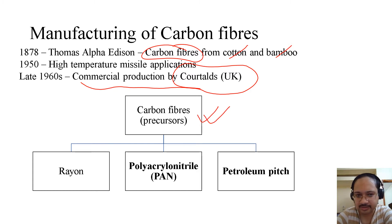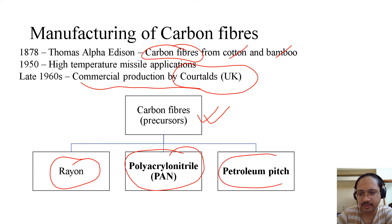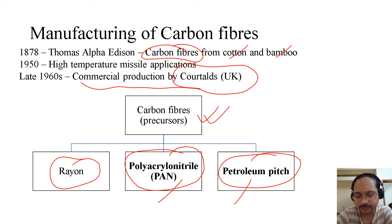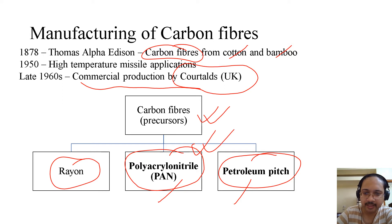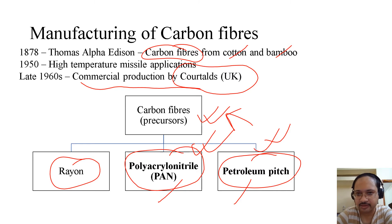Carbon fiber has a number of precursors: these can be rayon, polyacrylonitrile (PAN), and petroleum pitch. PAN and petroleum pitch have been highlighted because they are the most commonly used precursors for carbon fibers, and within those two, PAN is the most widely used.